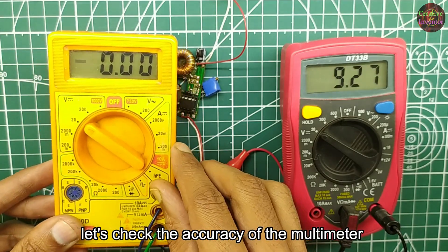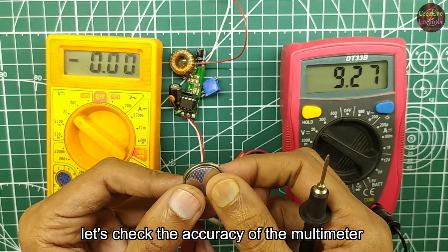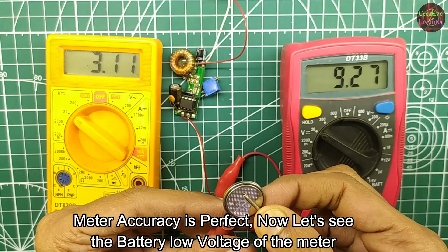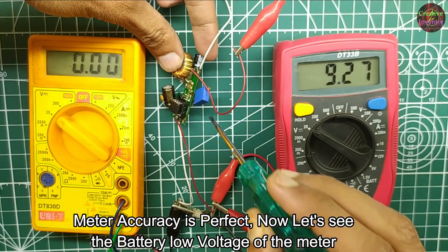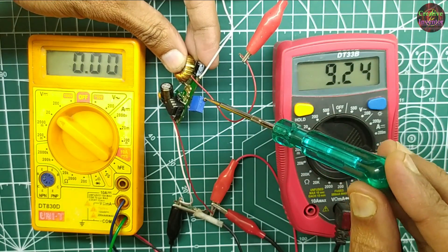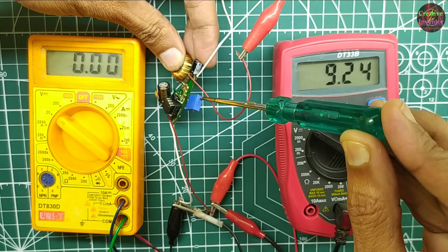Let's check the accuracy of the multimeter. The accuracy of multimeter is perfect while running on 3.7 volt battery. Also we will check at what voltage multimeters running on 9 volt battery indicates a battery low symbol.